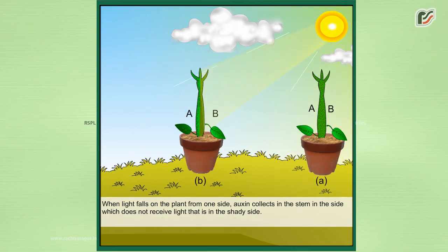In the second case, when light falls on the plant from one side, auxin collects in the stem on the side which does not receive light, i.e.